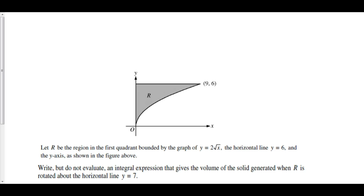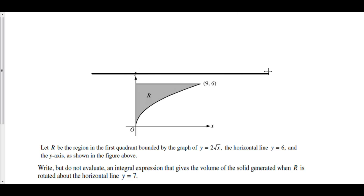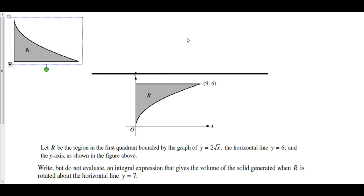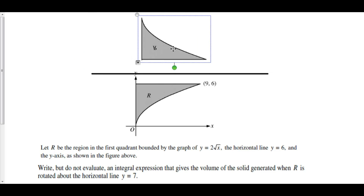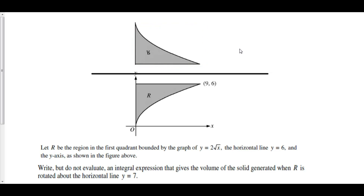Let's first create a picture of what is going on here. The horizontal line y equals 7 is approximately right here. Now, because we are rotating R about this horizontal line, and there's space between the line — the axis of rotation — and R, that means that we're going to have washers.